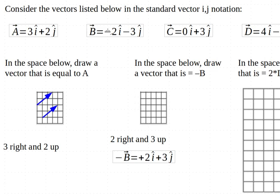First, I'm going to draw in the actual B vector. It's going to go 2 to the right and then 1, 2, 3 down. That's B.